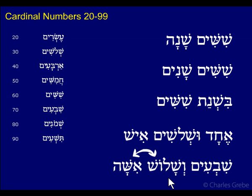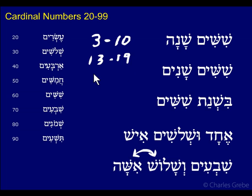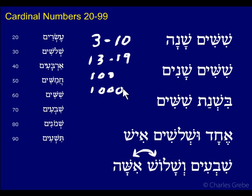The gender flip occurs with numbers three to ten, thirteen to nineteen, and embedded within those are all numbers that have three to ten as a unit — so twenty-three through twenty-nine also gender flip, thirty-three through thirty-nine, sixty-three through sixty-nine, etc. There are quite a lot of numbers that do this gender flip, so it's good to keep that in mind. These are the cardinal numbers twenty through ninety-nine.